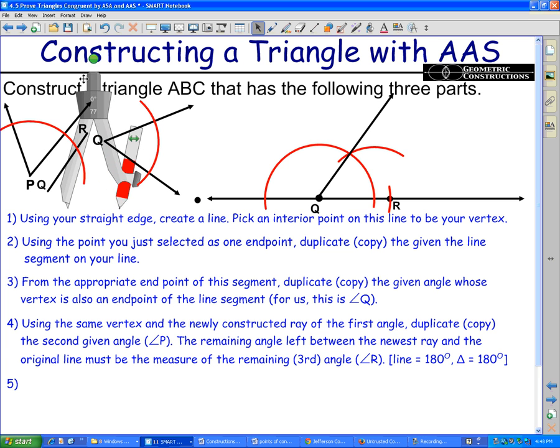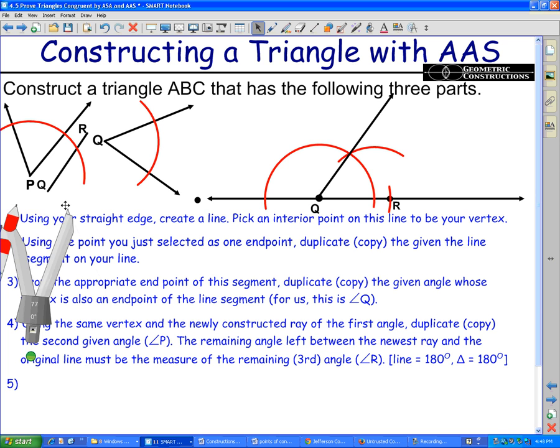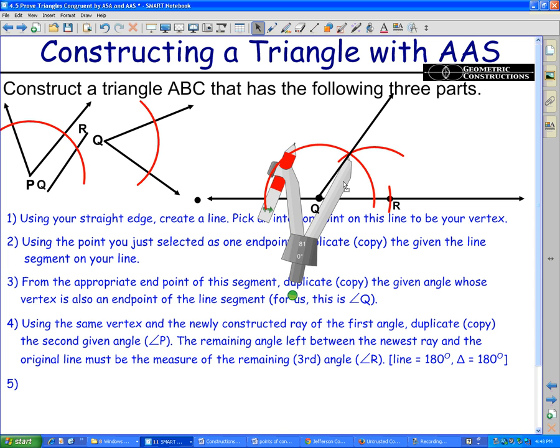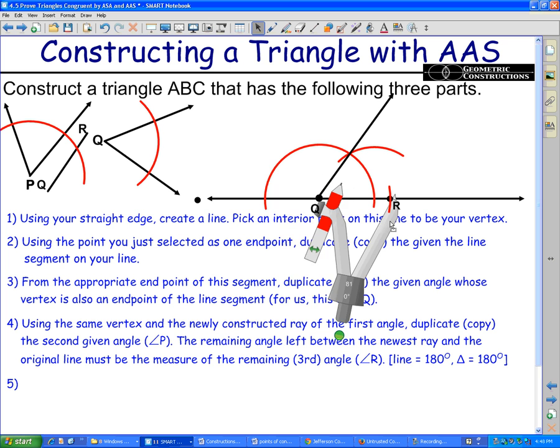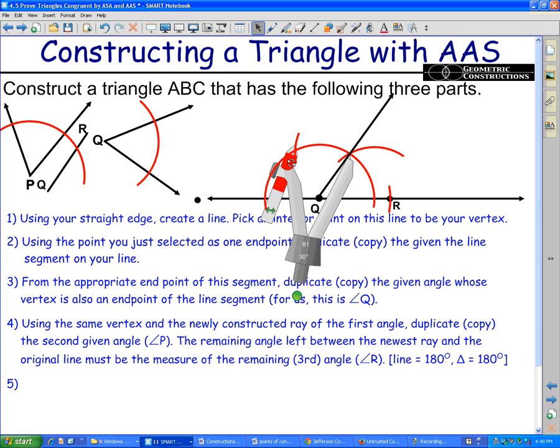But anyway, let's go over here and measure the distance between these two points on angle P. We almost have it. There we go. Got it there. And we're going to come back over here. Remember, this is where I'm starting from, not from the original line, but from the ray that I just constructed that angle on.